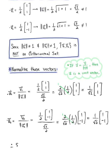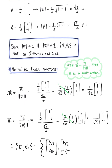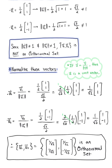Therefore, the set of vectors {u₁, u₂}, attained by normalizing v₁ and v₂, where u₁ has components (1/√2, 1/√2) and u₂ has components (1/√2, −1/√2), is an orthonormal set. This is a set of orthogonal vectors that are also unit vectors.